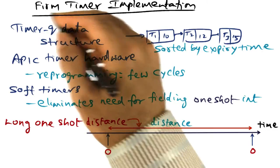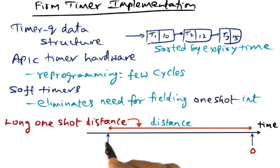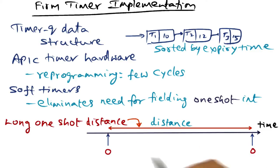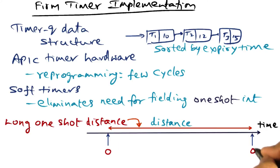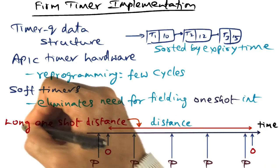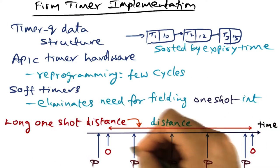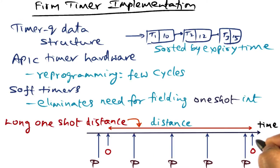Another optimization we can do is looking at the distance between one-shot events. In this picture, I'm showing you the long distance between two one-shot events. There's a one-shot event happening here, another one here, and another here. If you have such a long distance, it is possible that there may be several periodic timer events going off within this long distance.